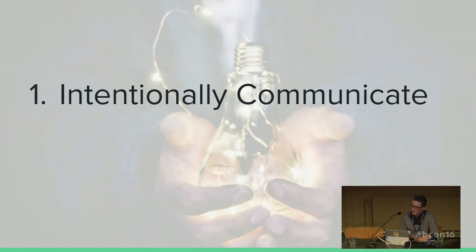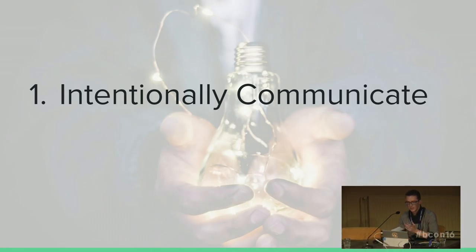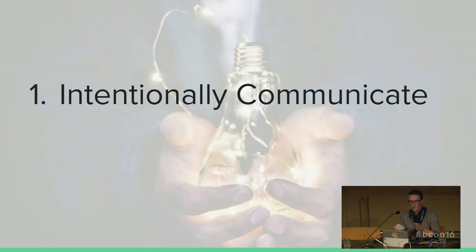The art that we make says something — it either tells a story about us or about the brand we're communicating for. The models, the textures, the lighting — all of it works together to say something. And if they're not all pointing in one direction, if your lighting says one thing and your model says something else, it gets really confusing. You need to make sure you are intentionally communicating something throughout all aspects of your scene.